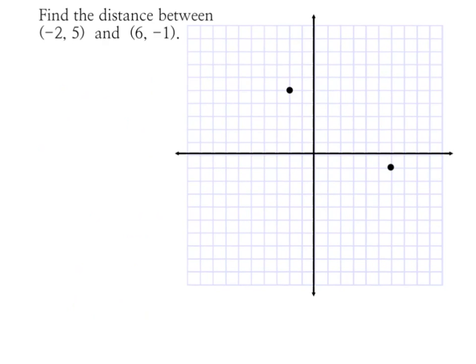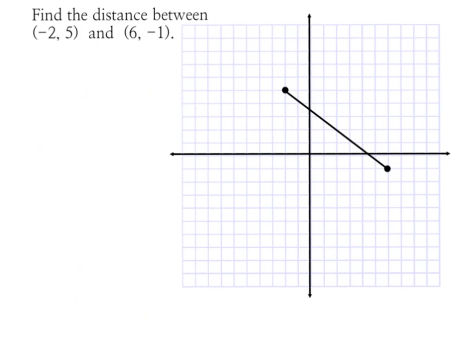Go ahead and double check that your points are graphed correctly. Then grab your straight edge and connect your points. Once you've connected those points, let's form our right triangle.